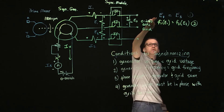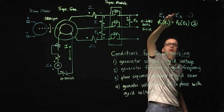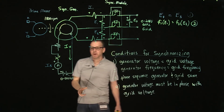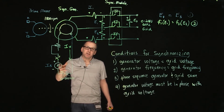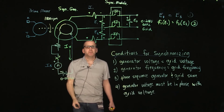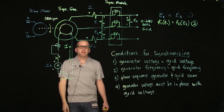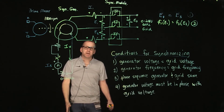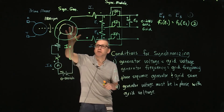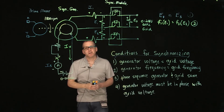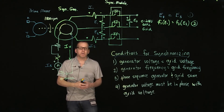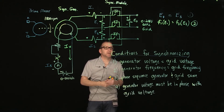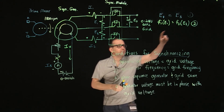In practice, we want the frequency of the incoming generator to be slightly higher than the frequency of the grid — for example, 60.1 or 60.2 hertz. The reason is that if the generator frequency is lower than the grid when we try to synchronize, it will come online as a load or a motor, which we don't want. So we want the frequency to be slightly higher than the grid frequency to satisfy condition two.